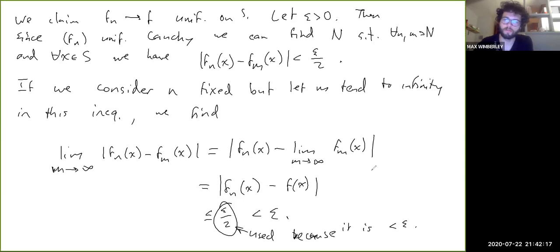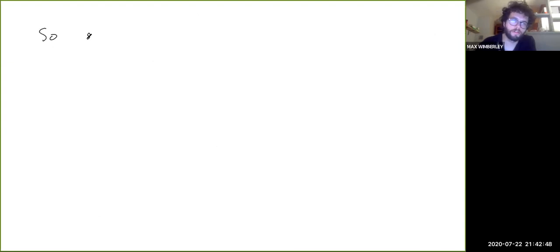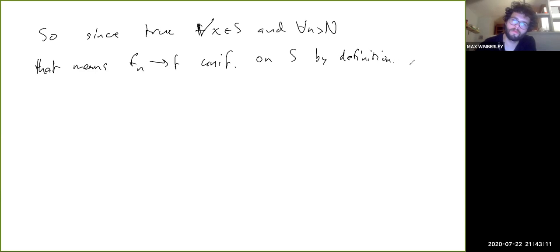So then, then what that means is, we're not totally done. So remember, this is true for all x in S, and n was arbitrary as well. So it's true for all n greater than capital N as well. So since it's true for all x in S, and for all n greater than capital N, that means fn goes to f uniformly on S by definition.